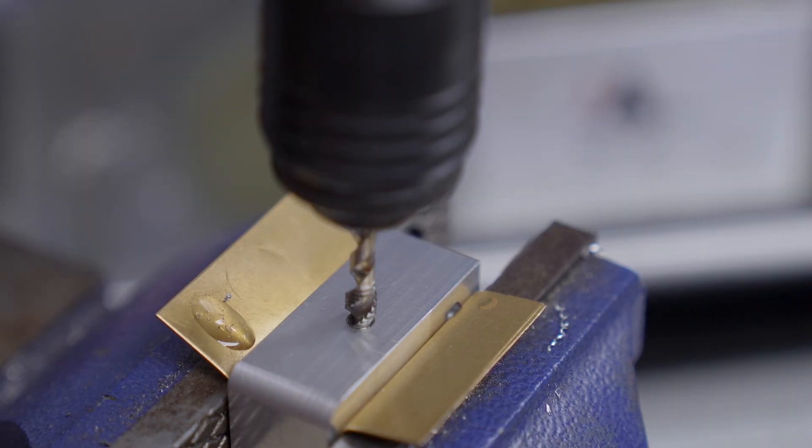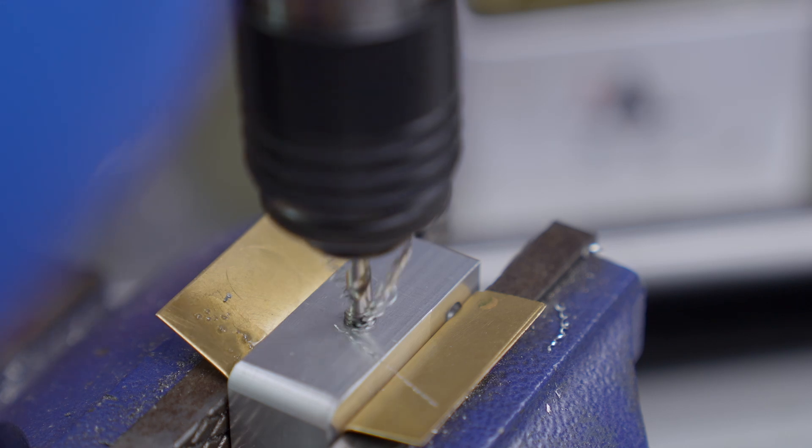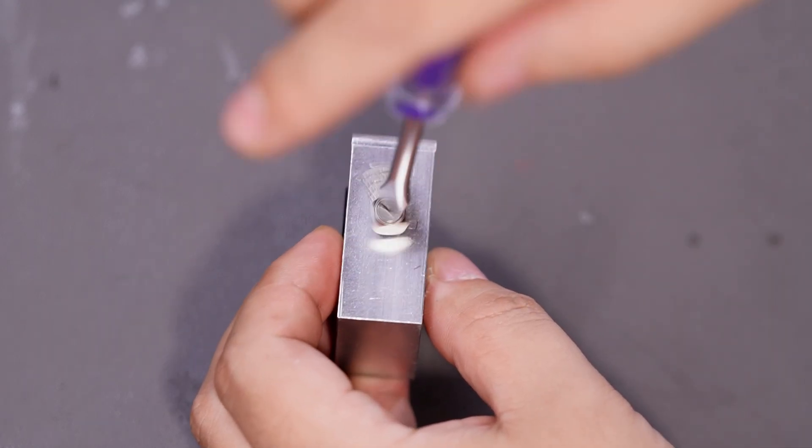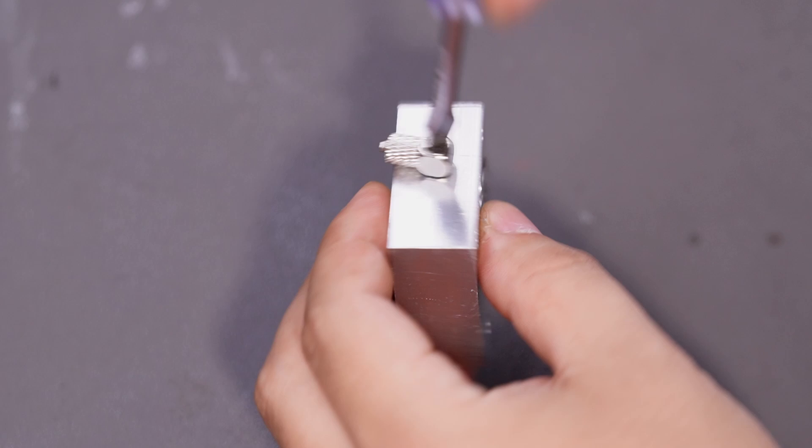Finally, I'll tap threads into the two side holes to install the quick connect fittings. And with that, the connector block is finished.